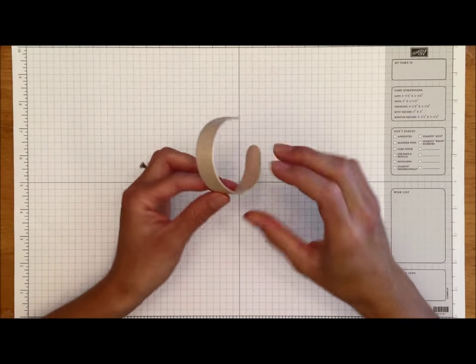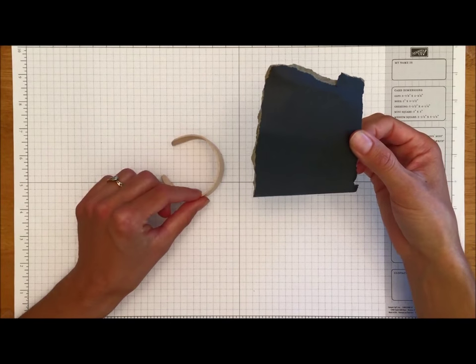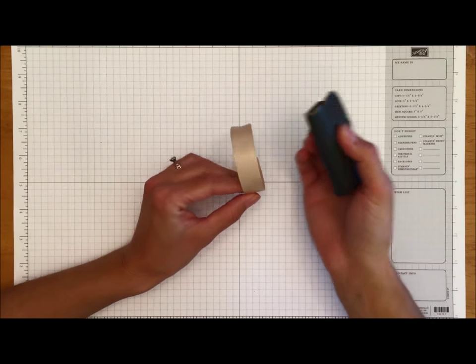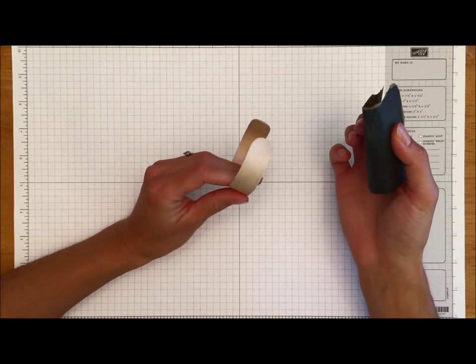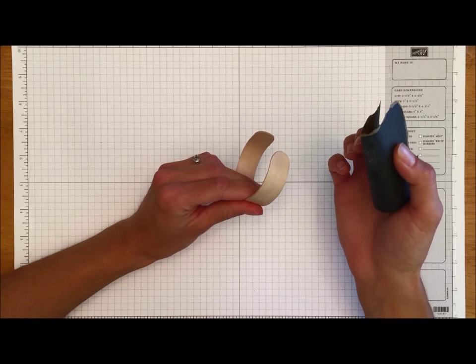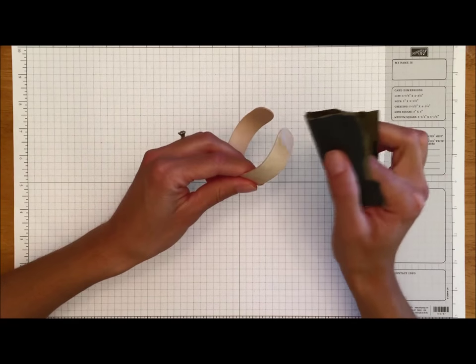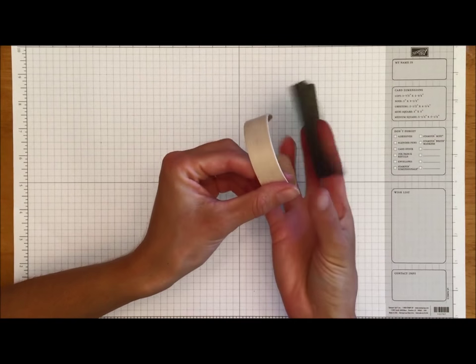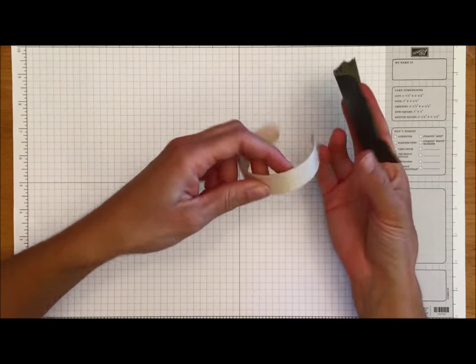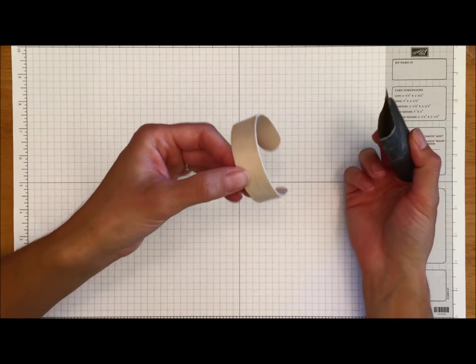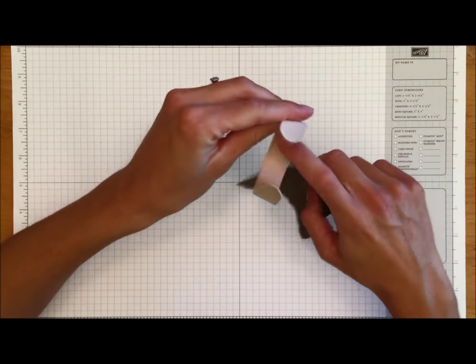To begin, you'll need your formed bangle and some fine grit sandpaper. I believe the grit on this is 220. Wrap it around your finger and just lightly sand away. What you're sanding to remove is any obvious splinters that have formed after bending and shaping the popsicle stick. There's no need to sand this completely smooth because when you paint or cover this bangle with paper that will remove a lot of the roughness. You can go ahead and sand the inside too if it feels a little rough.